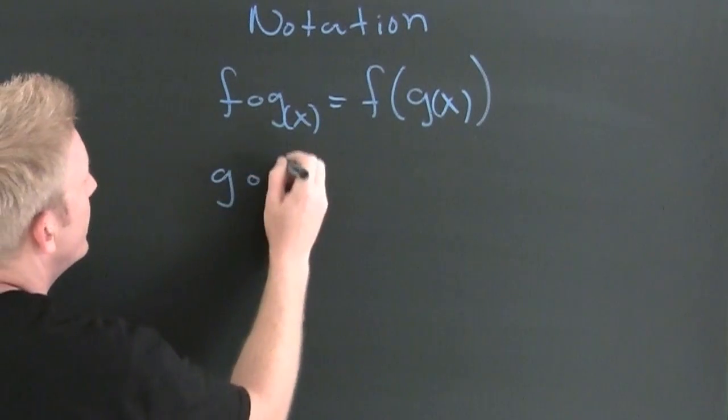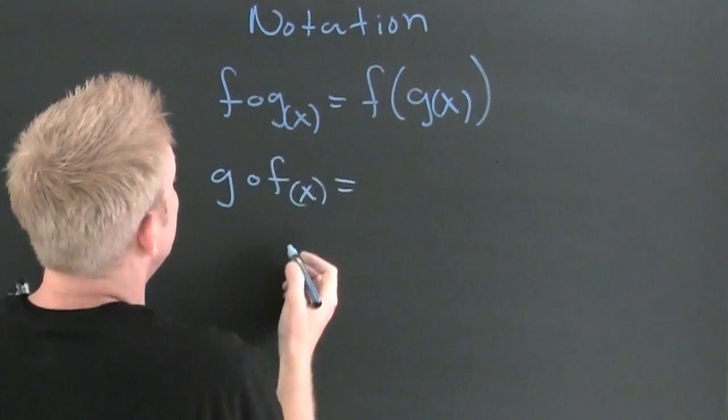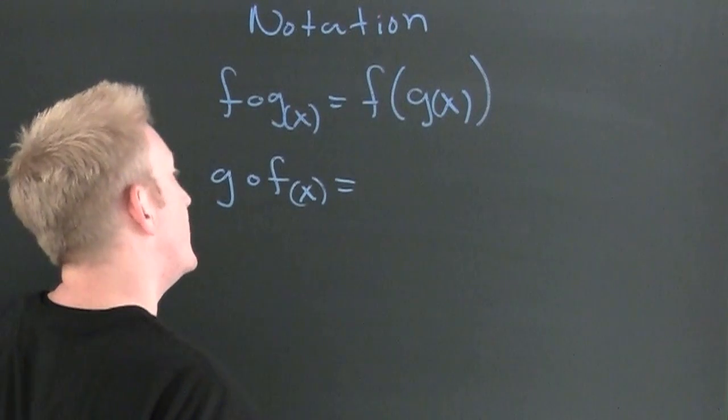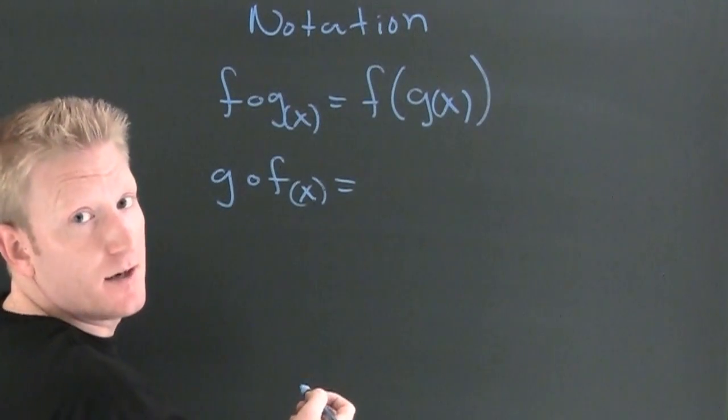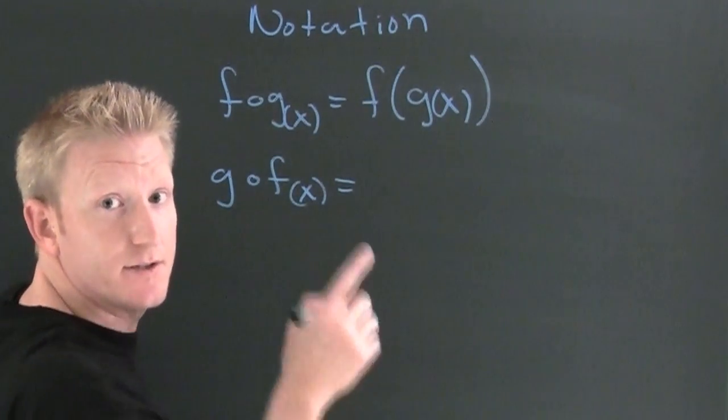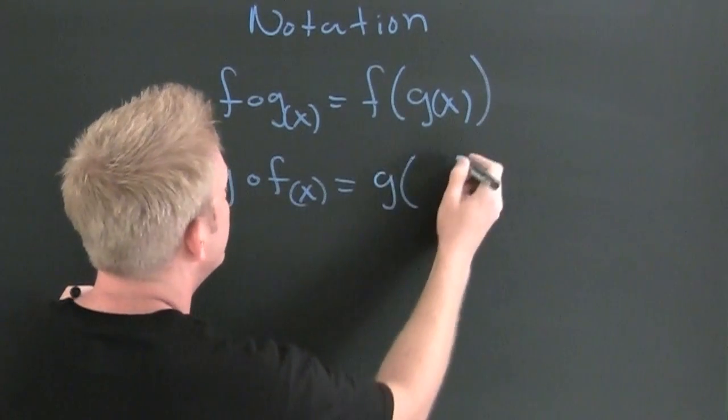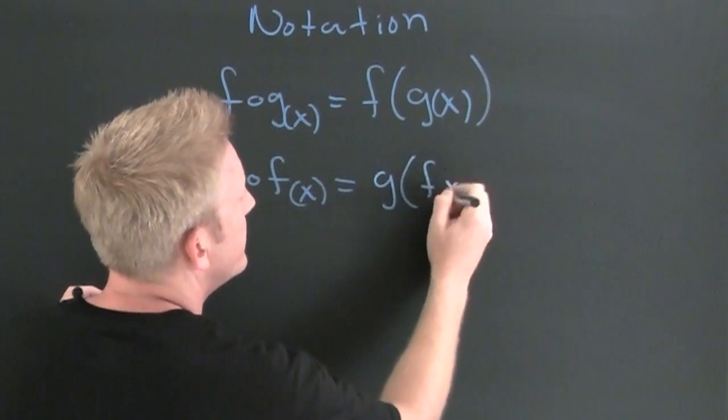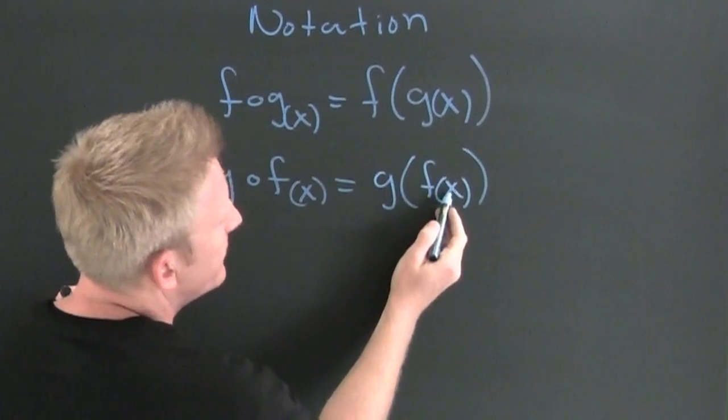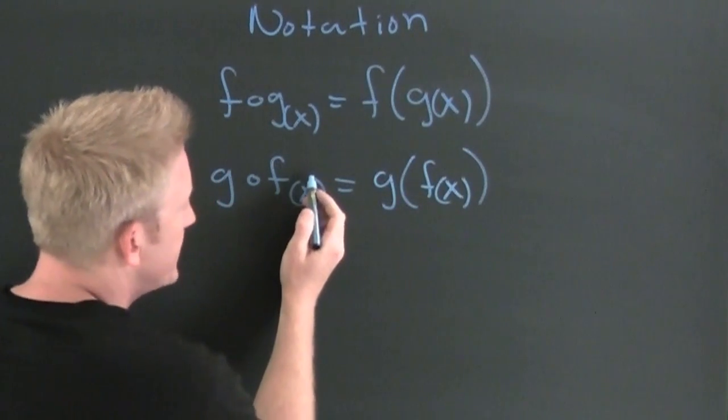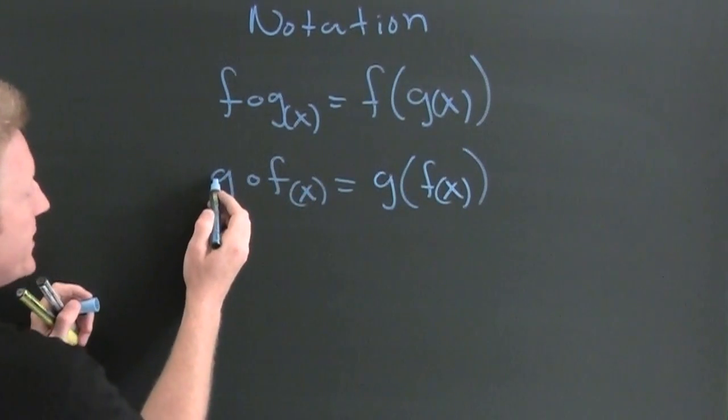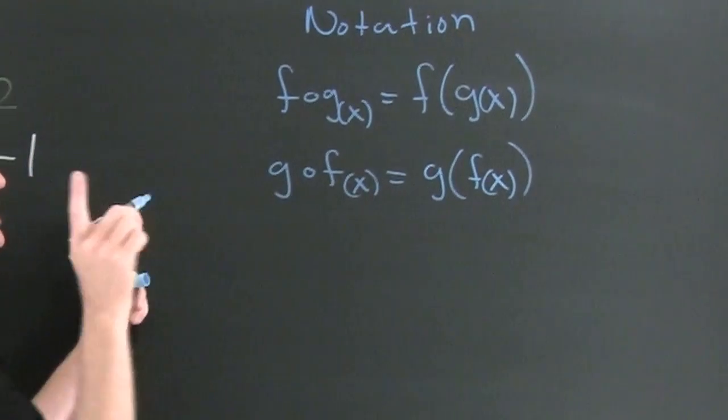No, they're not going to get the same algebraic outcome value, at least not all the time, unless of course they're inverses, which is where we're going with this. This is g of f of x, where we put f inside g.